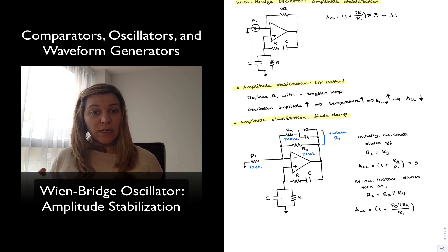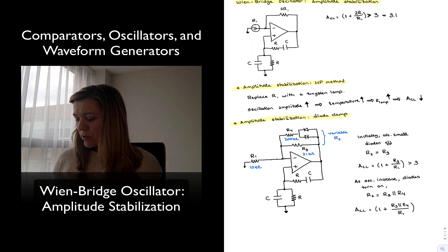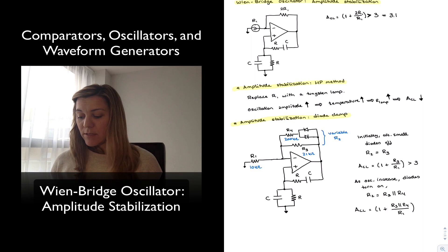And the idea is that eventually the circuit is going to stabilize when the oscillations have reached their steady state. And so it's going to stabilize with a gain of approximately 3. And that's the method for the diode clamp stabilization.